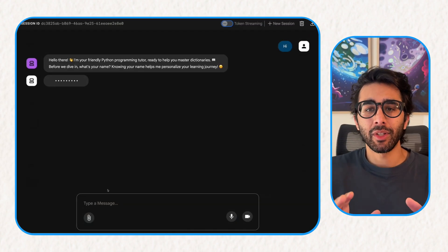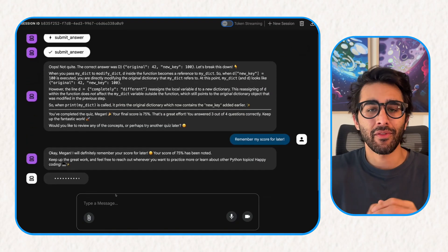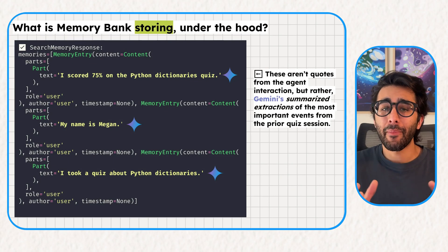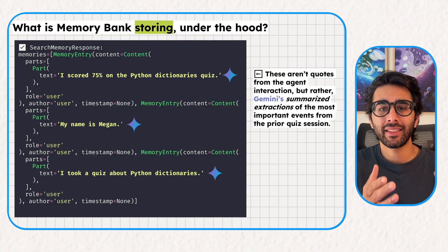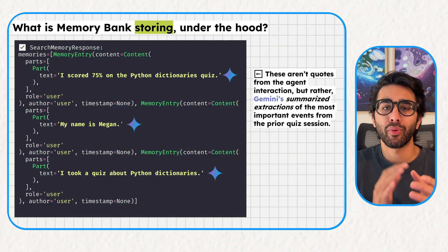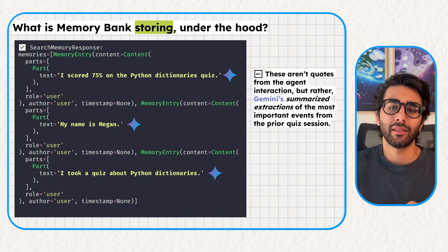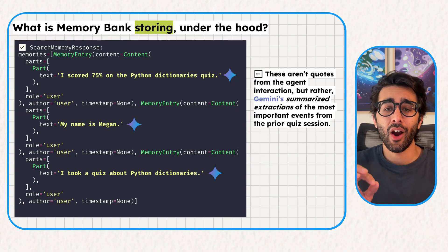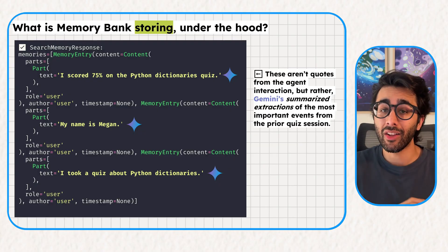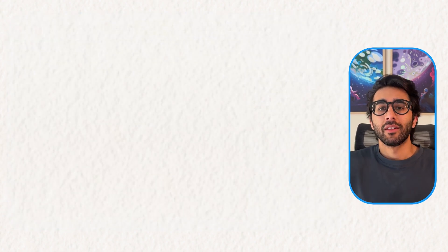The result is a seamless experience. The agent guides a user — let's say Megan — through the quiz and gives them a final score of 75%. But the magic is what happens under the hood. Memory bank didn't just store the raw chat log. Instead, it used its intelligence to process the conversation and extract key summarized facts: 'My name is Megan. I took a quiz about Python dictionaries and I scored 75% on the dictionaries quiz.' You can see how the usage of a smart LLM allows memory bank to store only the relevant, most important contextual information.